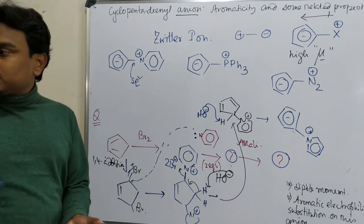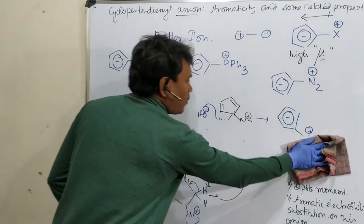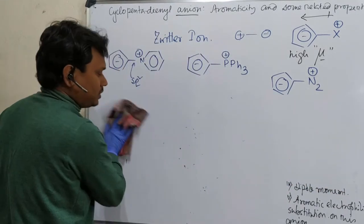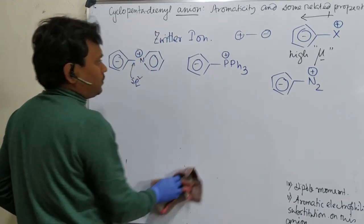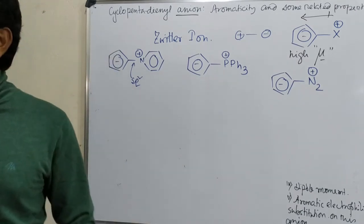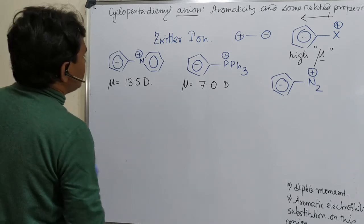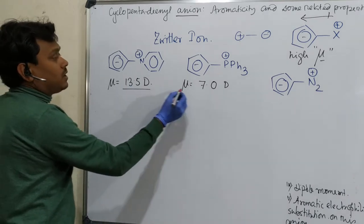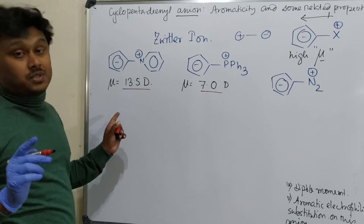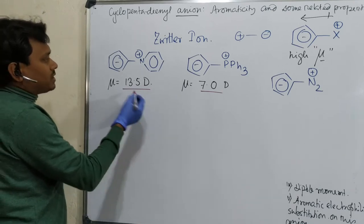Now let's discuss a property of these zwitterions — the dipole moment. An interesting observation: the PPh3 analog (triphenylphosphonium cyclopentadienylide) has a higher dipole moment of 13.5 D, compared to only 7.0 D for the pyridinium nitrogen analog. Both are structurally similar zwitterions. Why is the dipole moment lower for the pyridinium analog?